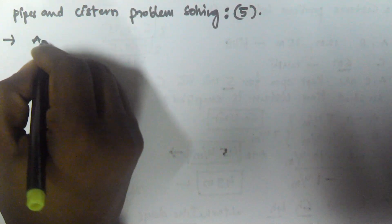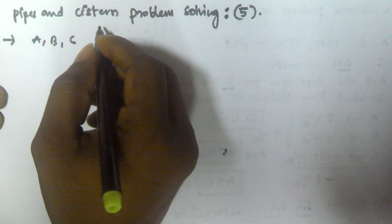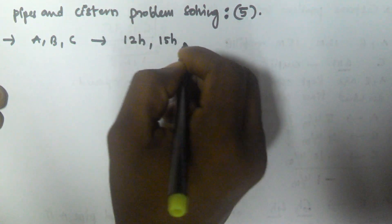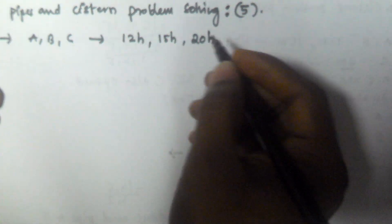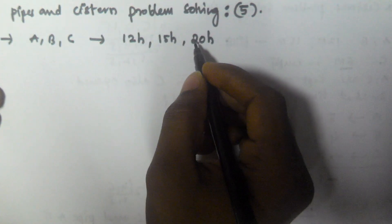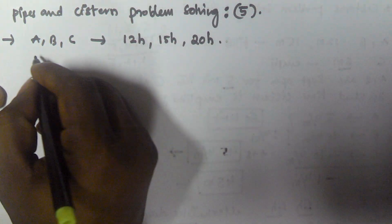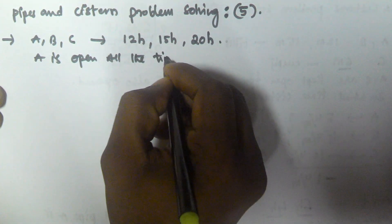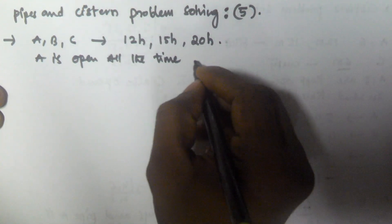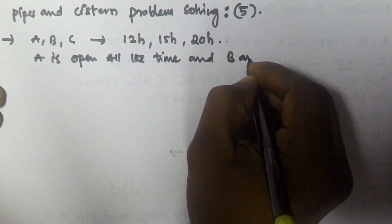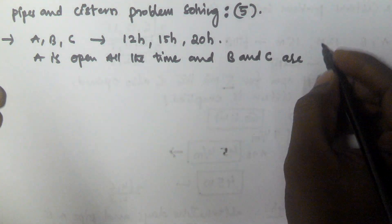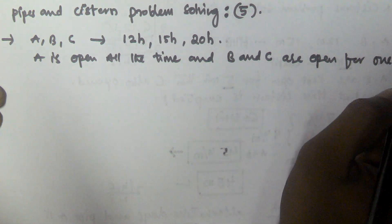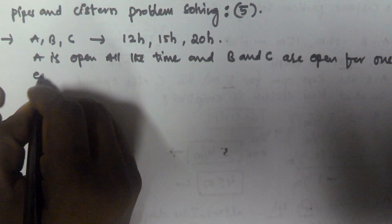Let us consider there are three pipes A, B and C. They can fill the tank in 12 hours, 15 hours and 20 hours respectively. A is open all the time, and B and C are open for one hour each alternatively.